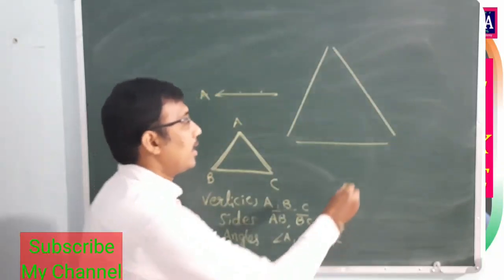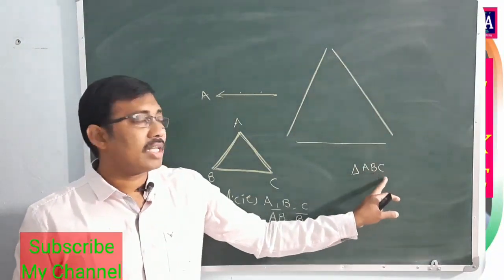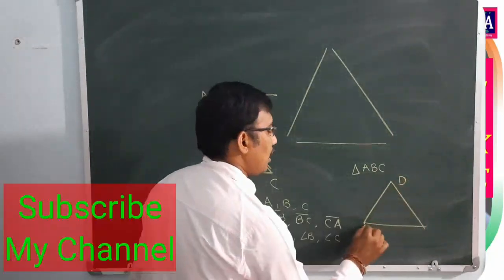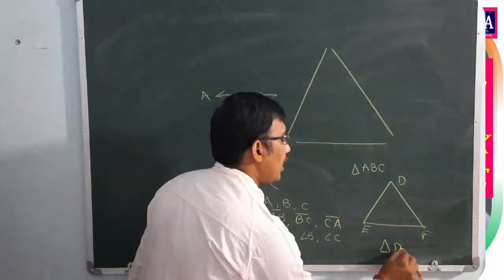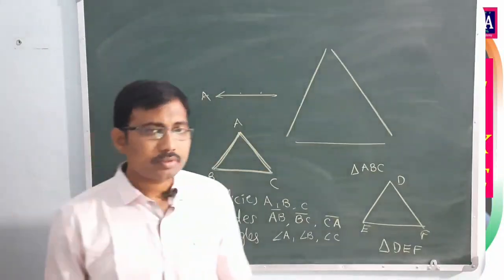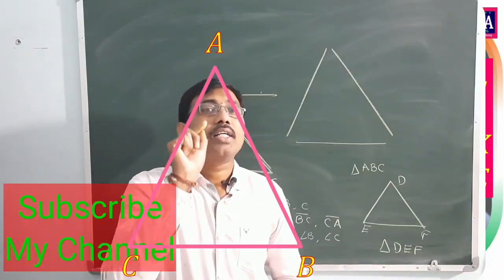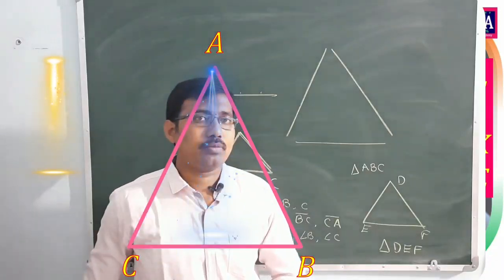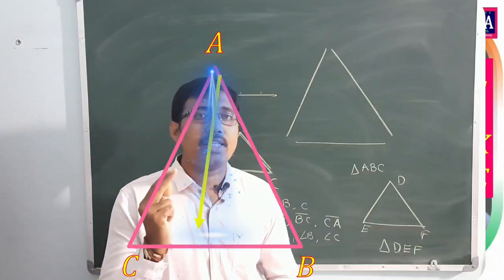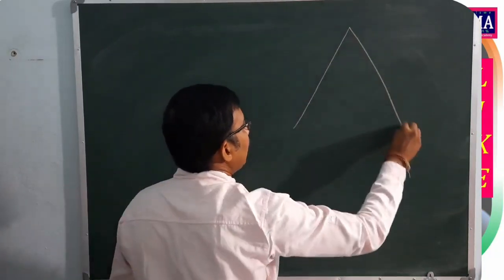Any triangle is denoted as triangle ABC, where A, B, C are the vertices. For example, another triangle DEF is denoted as triangle DEF. In any triangle ABC, the side is opposite to the angle, and the angle is opposite to the side. For example, side BC is opposite to angle A, and side AB is opposite to angle C.